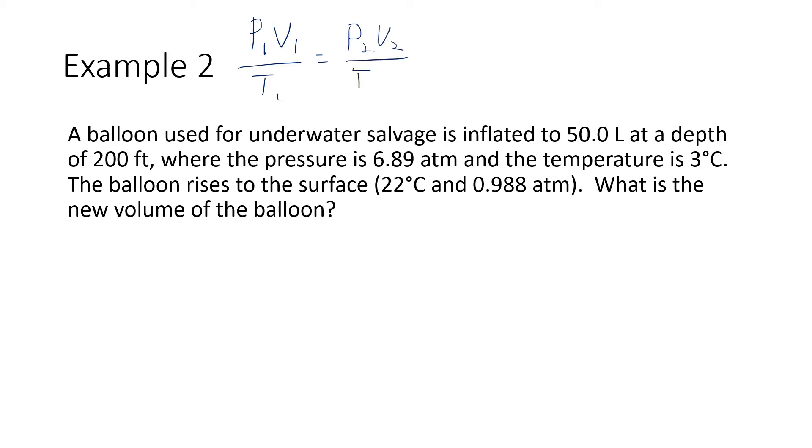So we've identified the equation that we need to use, and let's look for the given and our unknown. I'll do that in the form of a variable list over here. Let's say that the one conditions, P1, V1, and T1, apply when the balloon is down underwater. So P1 would be 6.89 atmospheres. And V1 is 50 liters. That's its volume down under the water. And T1 is 3 degrees C. But don't ever stop at degree C in a gas law problem. Immediately add 273 because you've got to convert it to Kelvin no matter what units you're using. So that becomes 276 Kelvin.